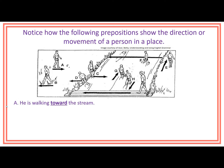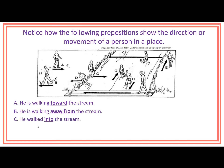Person A — he is walking toward the stream. Person B — he is walking away from the stream. Person C — he walked into the stream. Person D — he walked out of the stream.